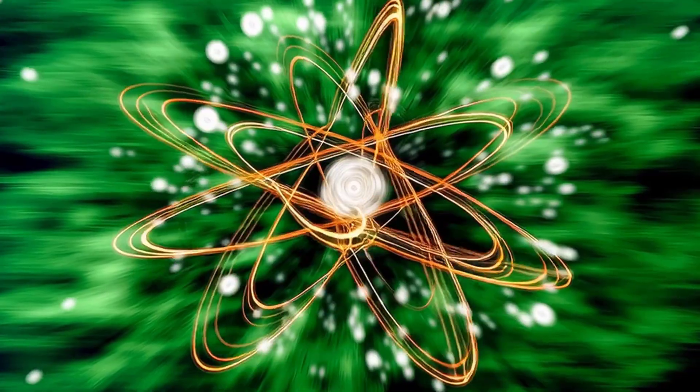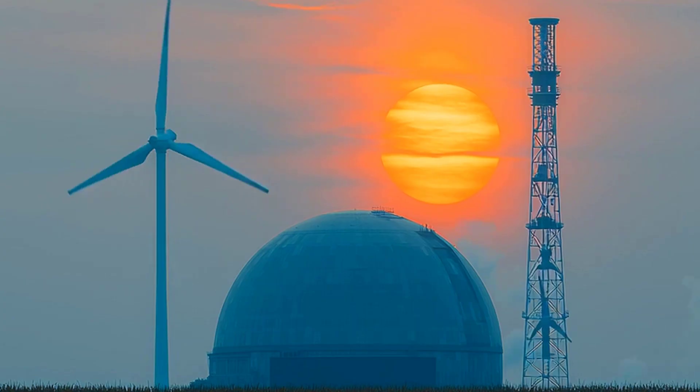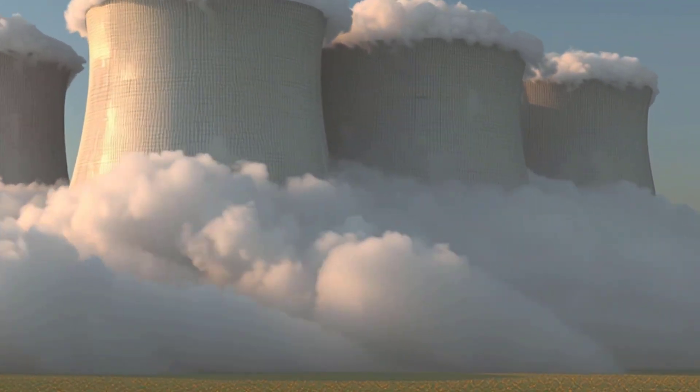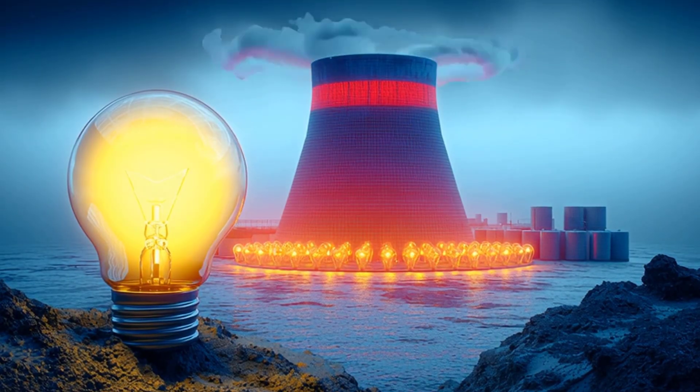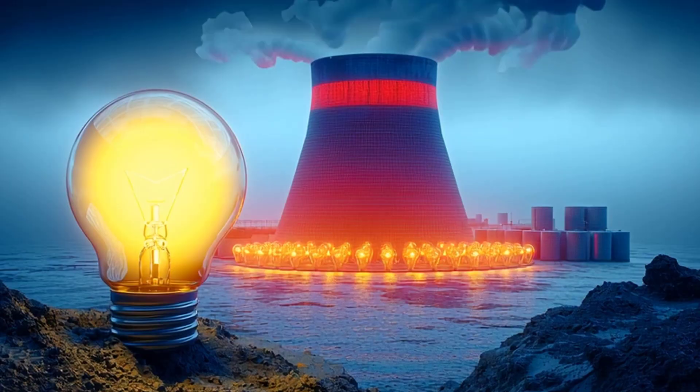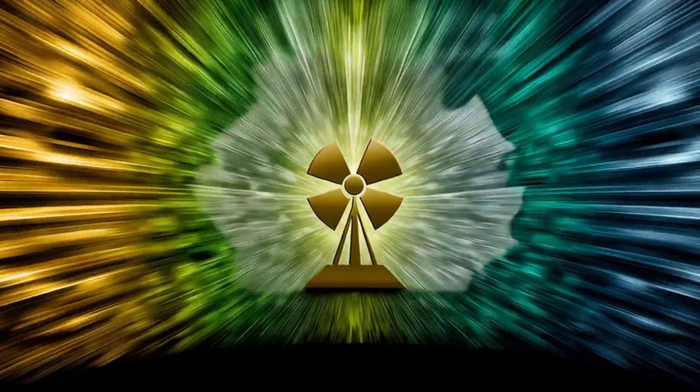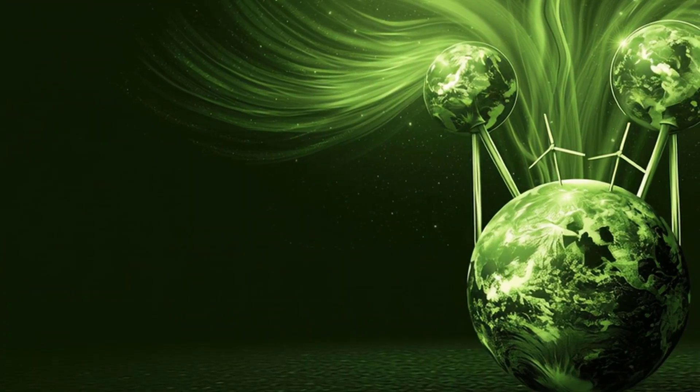On its own, thorium cannot sustain a chain reaction, which is why you cannot simply drop it into a reactor and expect energy to flow. But when thorium is bombarded with neutrons, it undergoes a transformation into uranium-233, which can split and release enormous energy. Each time an atom of uranium-233 fissions, it gives off heat, radiation, and more neutrons.